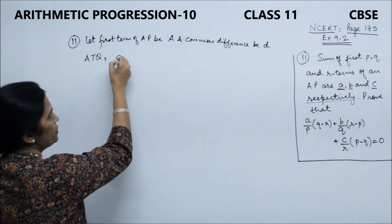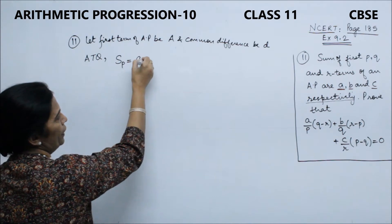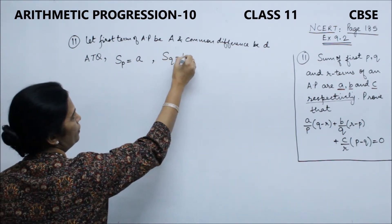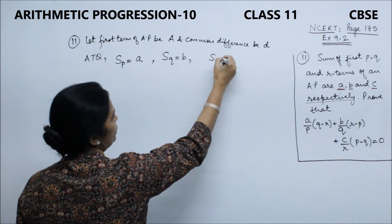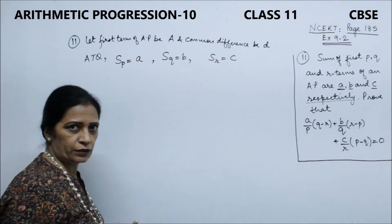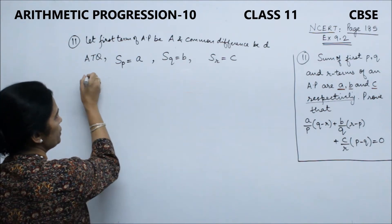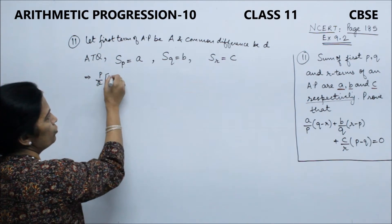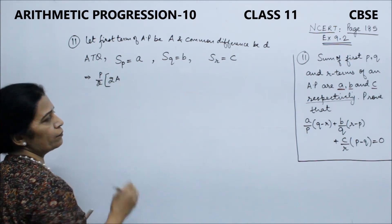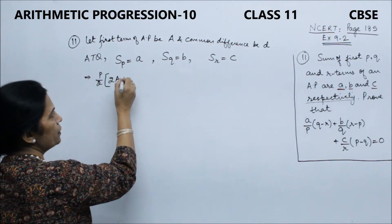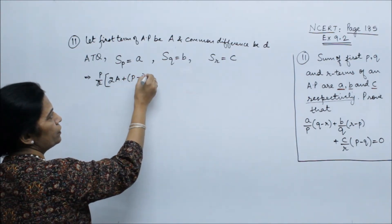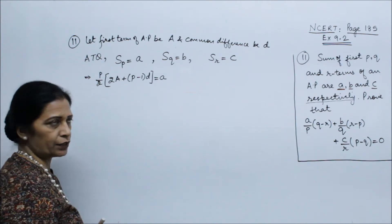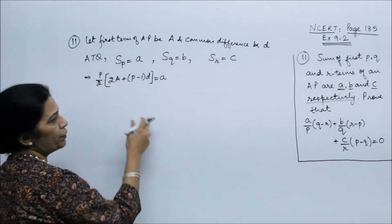Sum of first P terms is given to be A, sum of Q terms is B, and sum of R terms is C. Applying the sum formula: P/2 × (2·Capital A + (P−1)·D) = A.